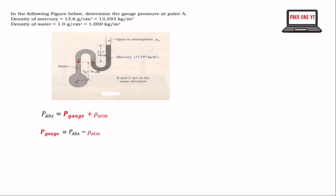We should first find the pressure from the C side. We have P_atm, the atmospheric pressure, acting on the liquid, which is open to the atmosphere. So there will be atmospheric pressure acting on the mercury.